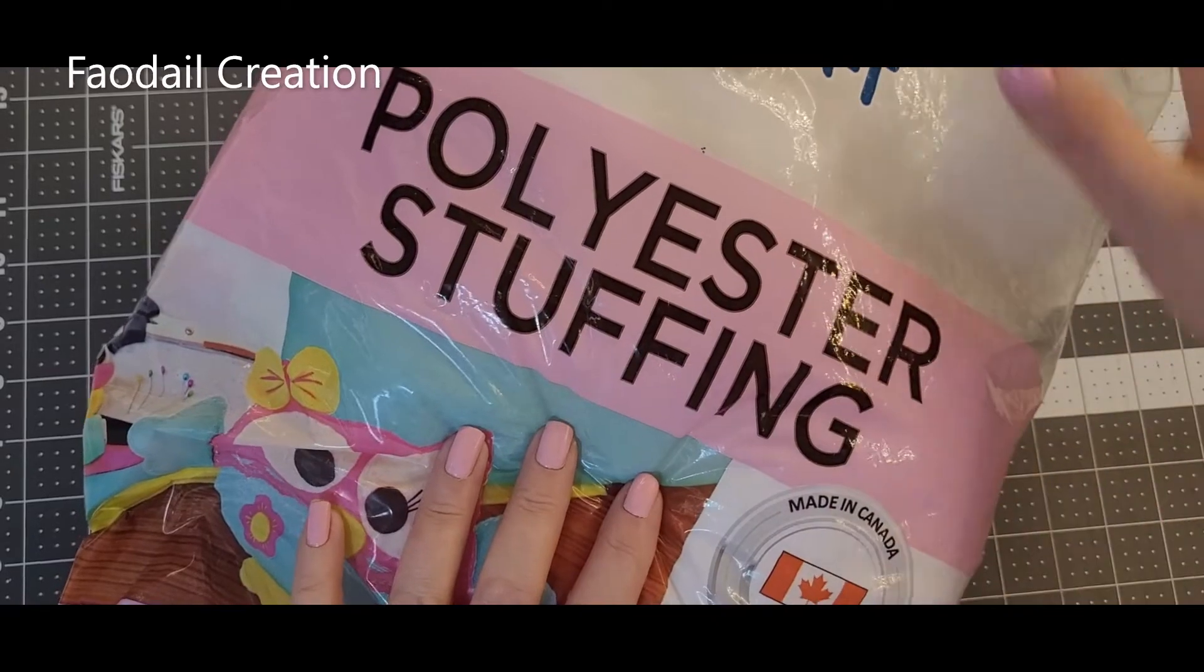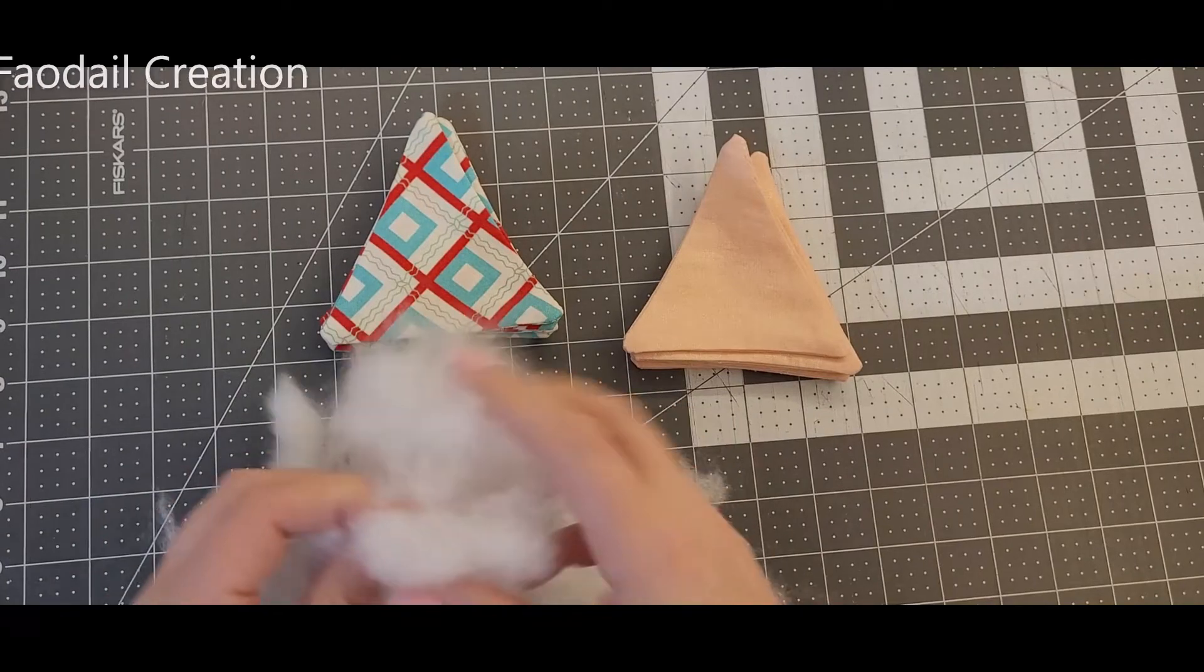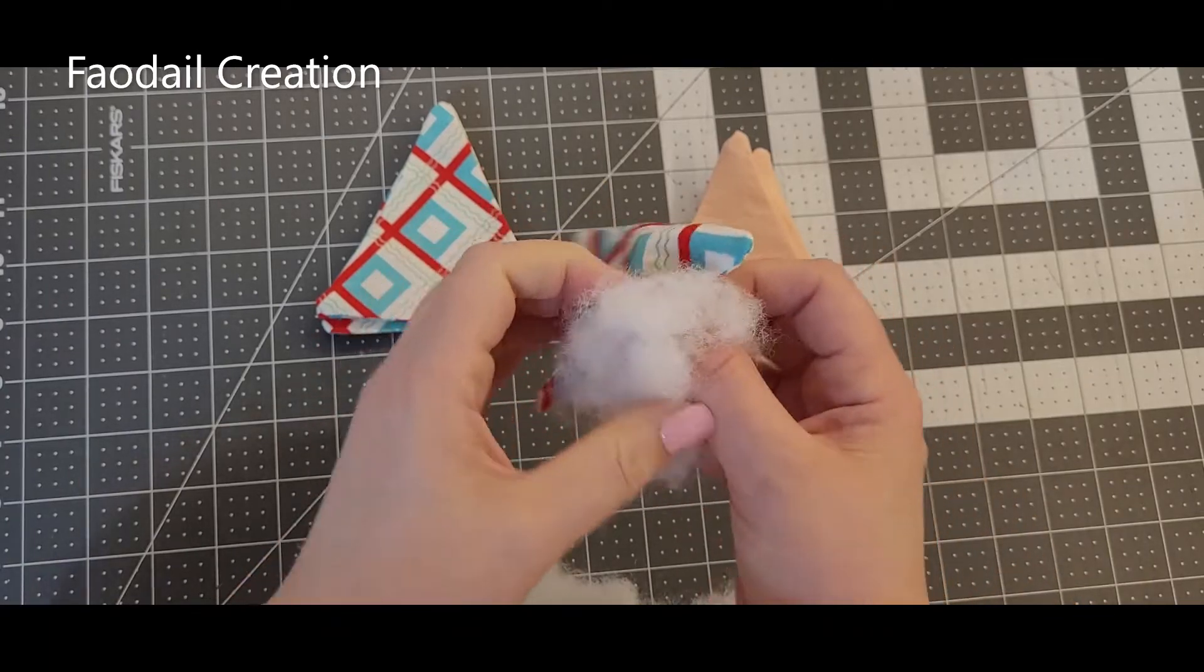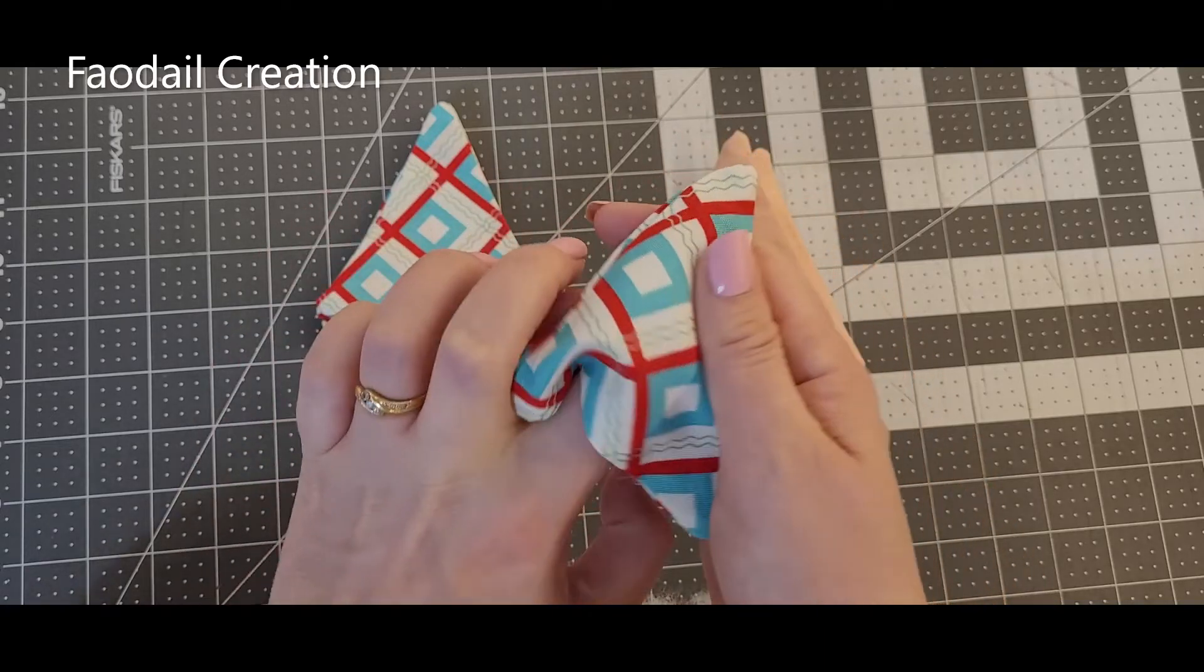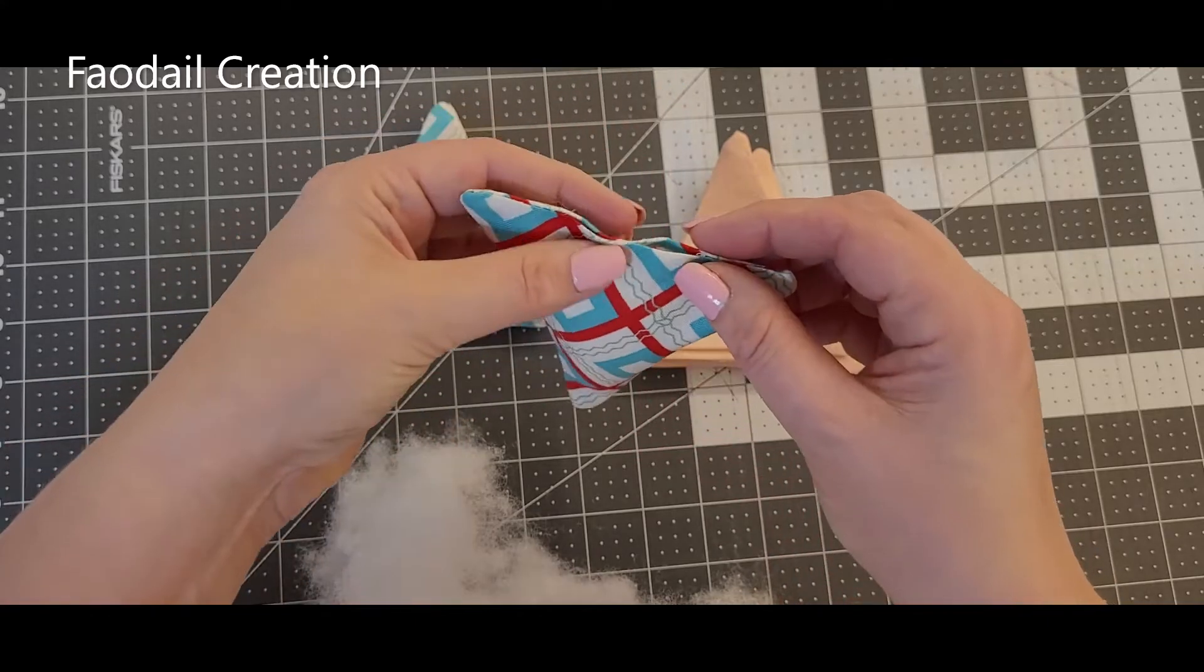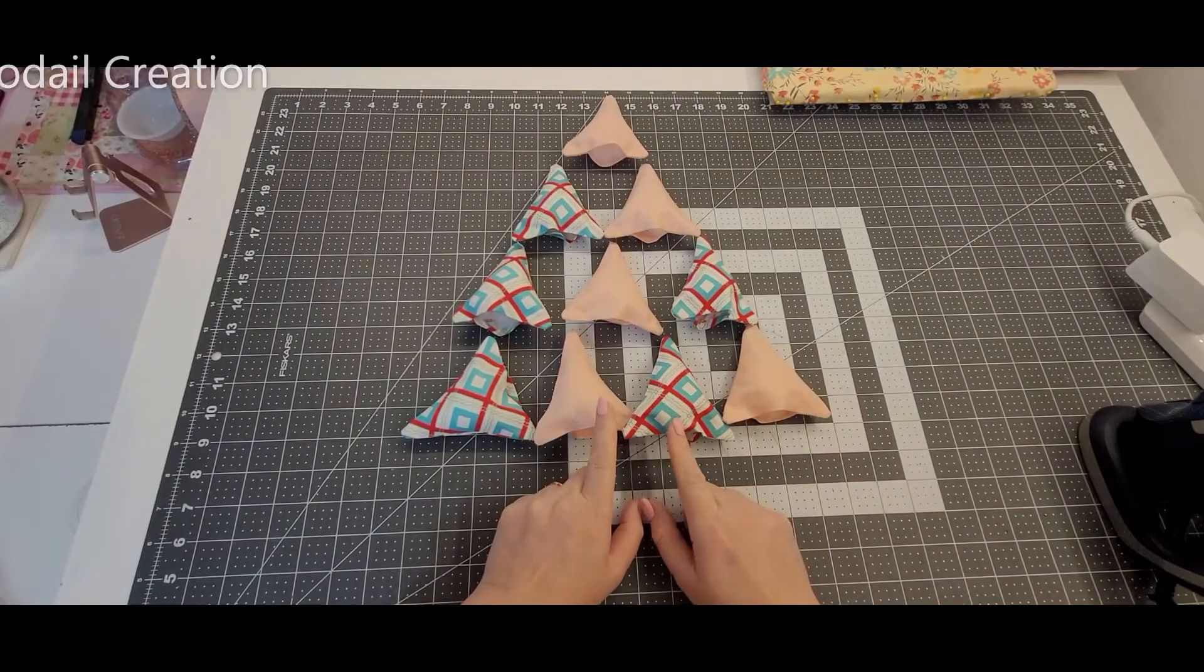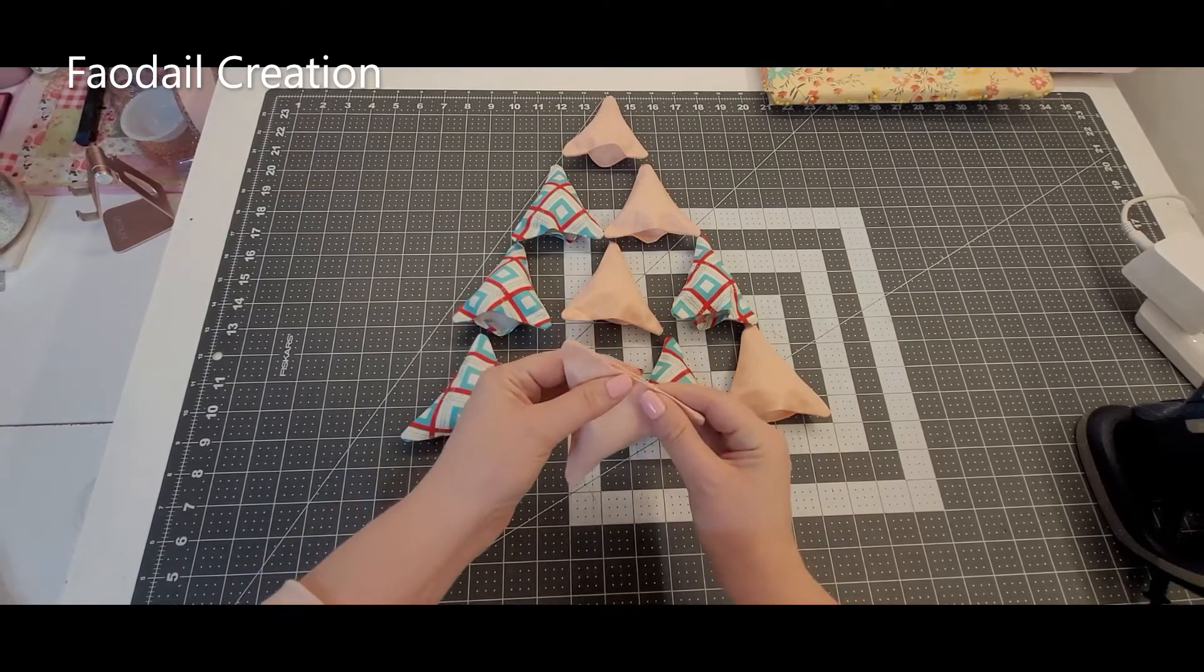Now I'm going to take some regular polyester stuffing. This is stuff that you would use for teddy bears. Now you don't need to overstuff these. It's just to create just a little bit of a 3D effect. You're going to put some in every single triangle. Just a little bit. And I would leave just enough so you could just run that over with your sewing machine, so you don't have to do any hand stitching at all.